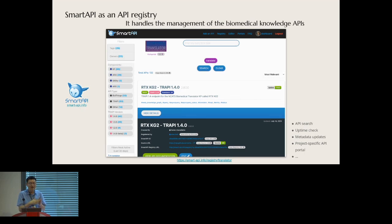Now we have so many APIs within the translator team. We built another tool called Smart API as an API registry that manages the API lifecycle. For example, testing uptime to make sure everything's good, and providing live API documentation based on OpenAPI standard. We even built a translator-specific API portal, so one project can manage all the knowledge APIs within one portal, within the Smart API registry.